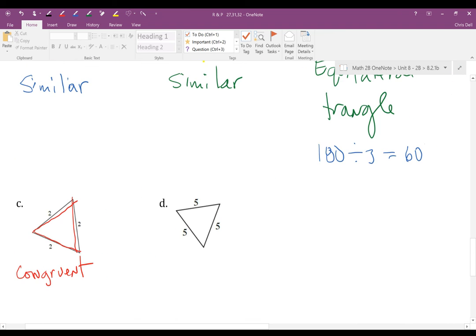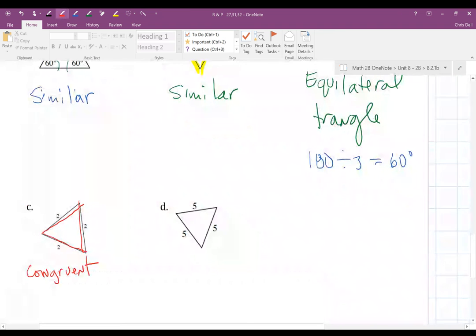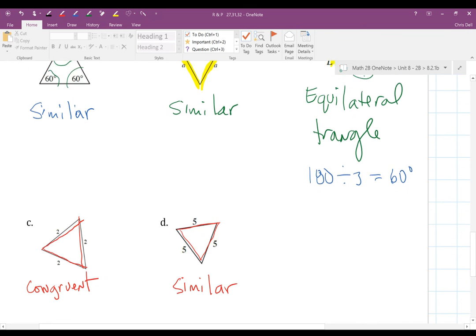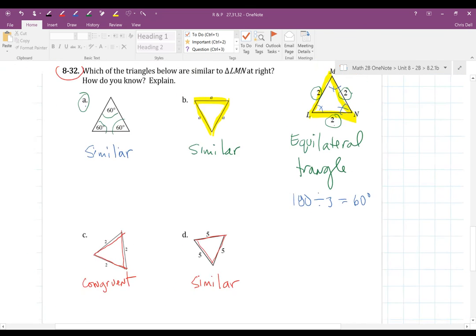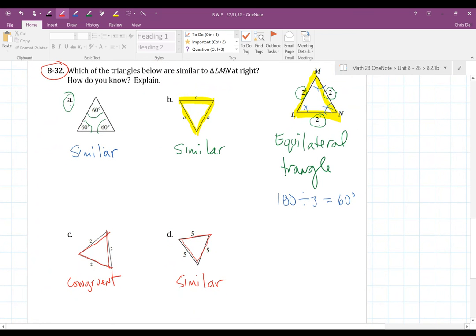And then D has side lengths of five, five, and five. Once again they're all equal, so it's not congruent but they are similar because this as well was an equilateral triangle. So to explain how we know: if you have an equilateral triangle and all of these are also equilateral triangles, all equilateral triangles are similar or congruent.